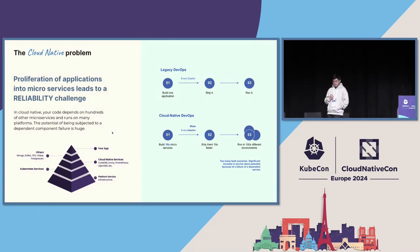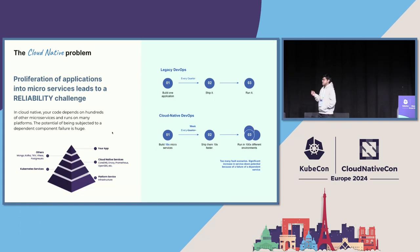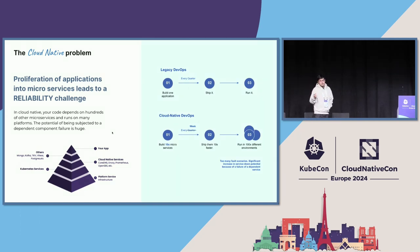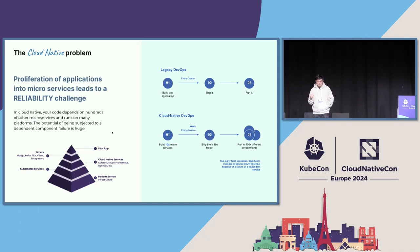The cloud-native problem: we're moving from legacy DevOps into cloud-native DevOps, shipping not every quarter but every week, which results in 10 times more microservices shipped 10 times faster across thousands of different environments. It's very easy to miss individual layers — you might not be able to test everything. If you look at the pyramid, you have your application, layers like Mongo and Kafka, the cloud-native service layer, the Kubernetes layer, the platform layer — not everything is tested because we don't always have enough time.